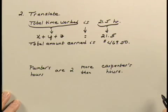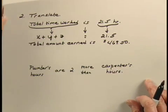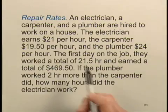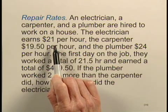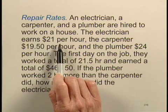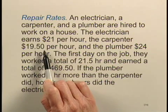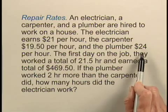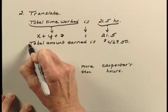The next thing that we're told is that the total amount that they earned is $469.50. Now, if we go back to the statement of the problem, the electrician earns $21 per hour and worked X hours, so the electrician would earn 21X. The carpenter earns 19.5 times Y, and the plumber earns 24 times Z.